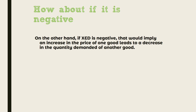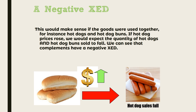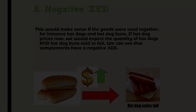On the other hand, if XED is negative, that implies an increase in the price of one good leads to a decrease in the quantity demanded of another good. This makes sense if the goods are used together — for instance, hot dogs and hot dog buns. If hot dog prices rose, we would expect the quantity of both hot dogs and hot dog buns sold to fall. Complements have a negative XED.